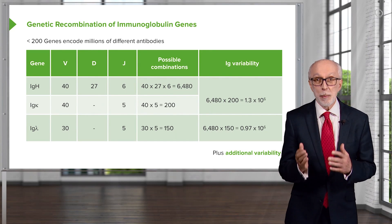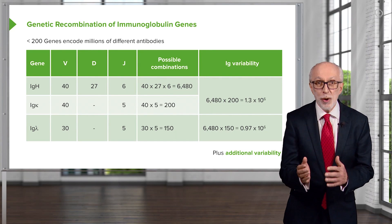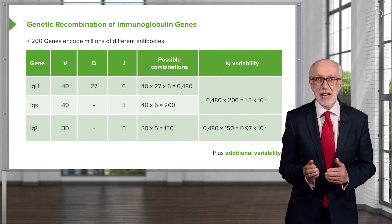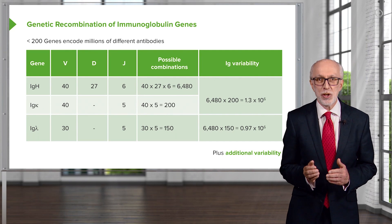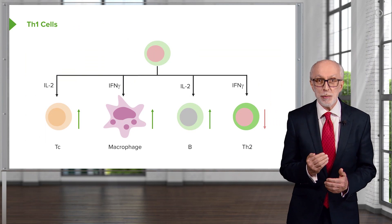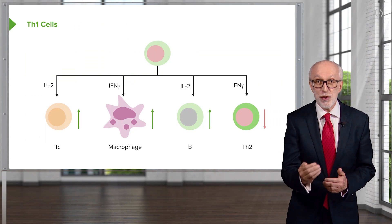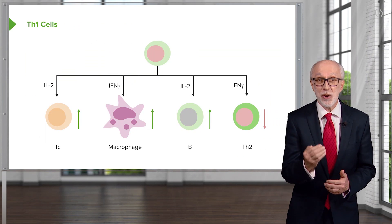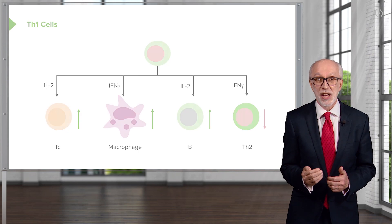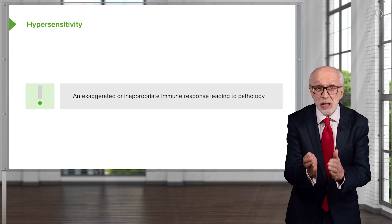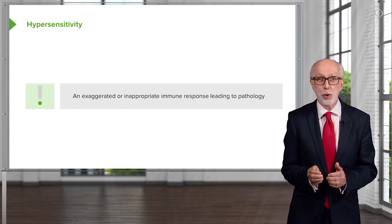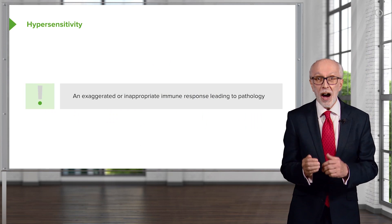Do you know how, from less than 200 genes, many millions of different antibodies can be produced? Can you name the transcription factors that characterize Th1, Th2, and Th17 cells? And can you explain how immune responses can cause pathology?